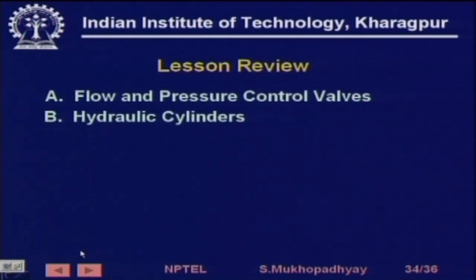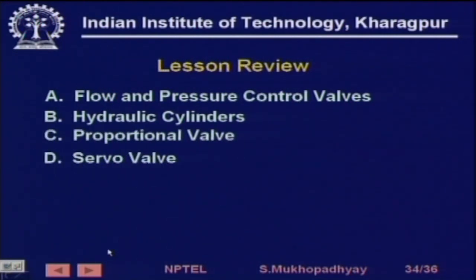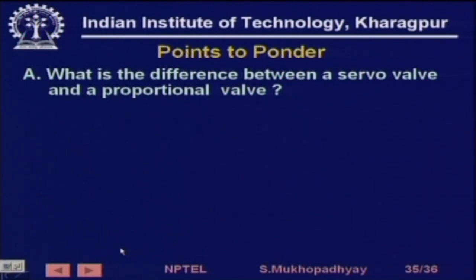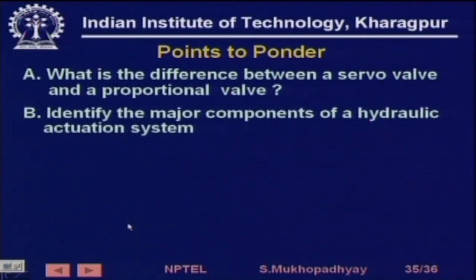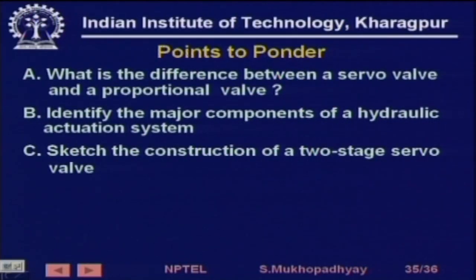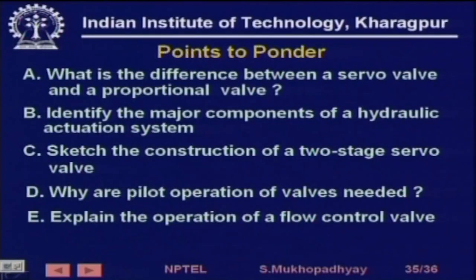We have come to the end of the lesson. We have seen flow pressure and control valves, hydraulic cylinders, proportional valves, servo valves, and some hydraulic actuation systems. Points to ponder: What is the difference between a servo valve and a proportional valve — is it in terms of feedback, performance accuracy, structure, or drive? Identify the major components of a hydraulic actuation system. Sketch the construction of a two-stage servo valve and explain how the feedback works. Why are pilot-operated valves needed? Can you think of some actual application and explain the operation of a flow control valve — how flow is controlled irrespective of pressure variation by a mechanical arrangement? Thank you very much.